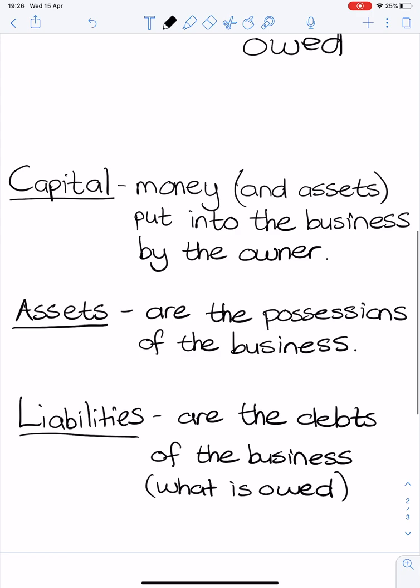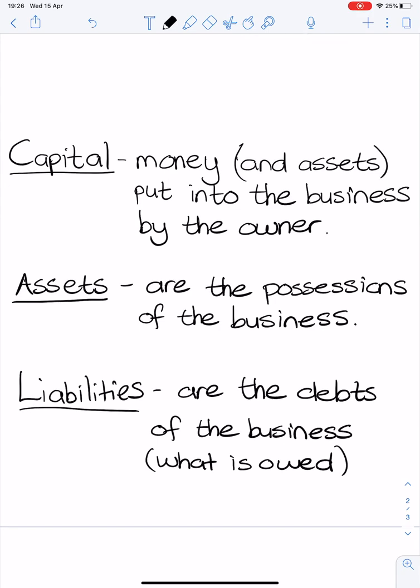So, let's have a quick look at that again. Capital. Money. And assets. Put in the business. By the owner. In order to start the business up. Assets. The possessions of the business. What is owned by the business. And liabilities. Are the debts of the business. What is owed. And by them. To suppliers. Or to the bank.